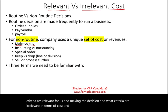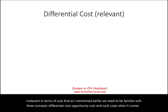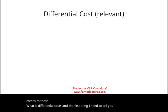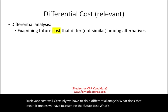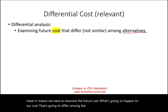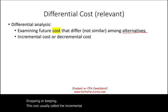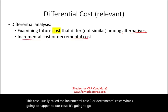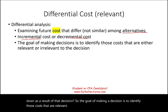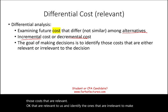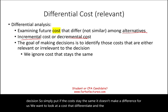For non-routine decisions, we need to be aware of what criteria are relevant and what are irrelevant in terms of cost. Differential cost is a relevant cost — we examine future costs that will differ among alternatives such as buying versus making, or dropping versus keeping. This is also called incremental or decremental cost. Simply put, if costs stay the same, they don't make a difference; we want costs that differentiate.